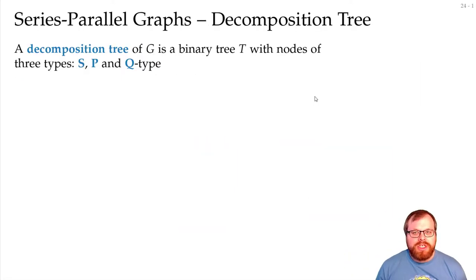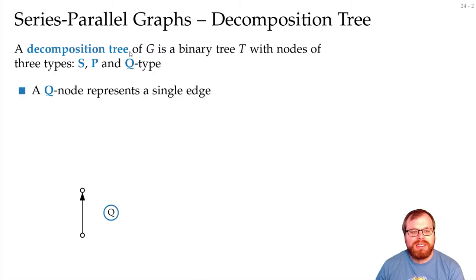Such a decomposition tree has three types of nodes: S, P, and Q types. A Q node is just a single edge, those are the leaves of our decomposition tree.